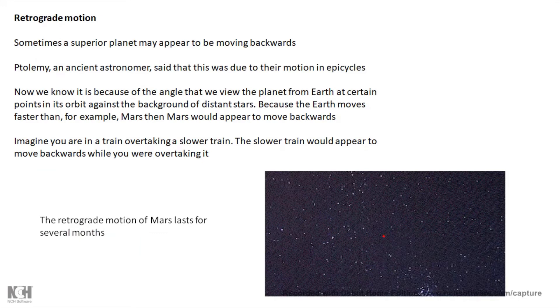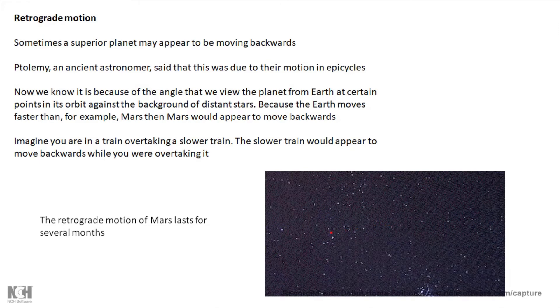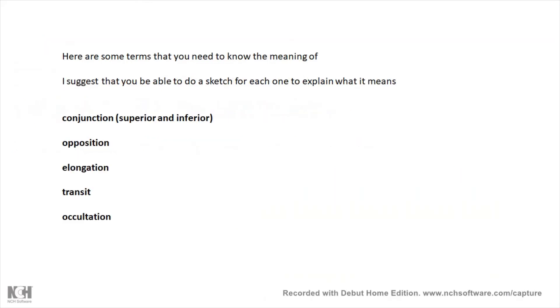Retrograde motion is when a superior planet appears to move backwards. On this animation we can see Mars moving backwards. It actually takes a couple of months to do this. Why do these planets appear to move backwards? And now we know it's not as Ptolemy suggested, that they move in epicycles. We know that it's because the Earth is moving faster in its orbit than these planets, and as the Earth overtakes the planet then the planet appears to move backwards, just as if you imagine you're in a fast train overtaking a slower train which is moving in the same direction, then the slower train would appear for a while to be moving backwards. And that's retrograde motion.